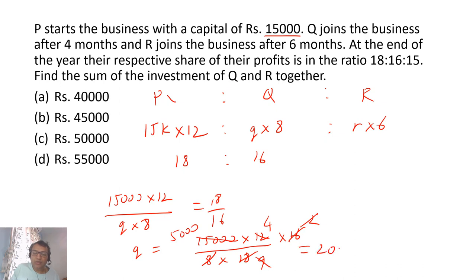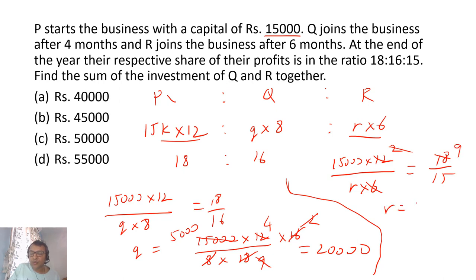In the first case, just equate the equation of ratios. Now we look at P and R. P is 15,000 × 12 upon R × 6 is equal to ratio is 18 upon 15. So 6 gets cancelled, 2 to 2 gets cancelled, 9 you can do. So R is equal to 15,000 × 15 ÷ 9. Nine will get cancelled with here 5 and here 5,000. You'll get R as 25,000.